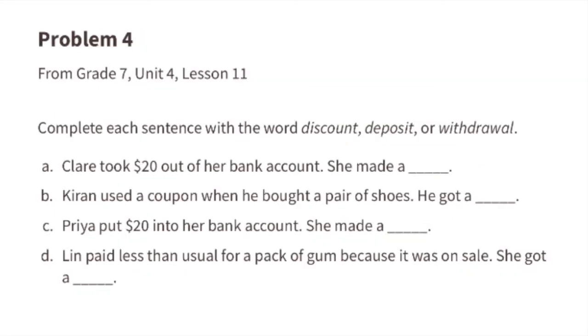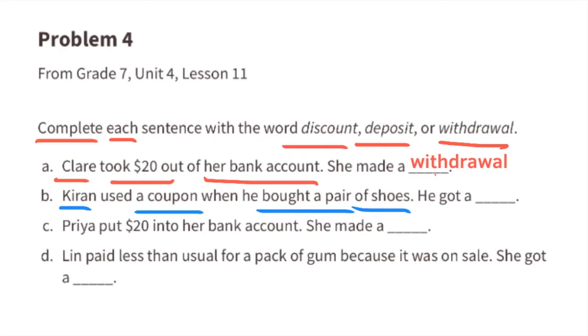Problem number four from seventh grade Unit 4, Lesson 11. Complete each sentence with the word discount, deposit, or withdrawal. A: Claire took twenty dollars out of her bank account. She made a withdrawal. B: Kieran used a coupon when she bought a pair of shoes. She got a discount. C: Prea put twenty dollars into her bank account. She made a deposit. D: Lynn paid less than usual for a pack of gum because it was on sale. She got a discount.